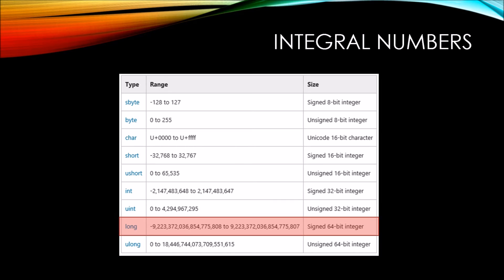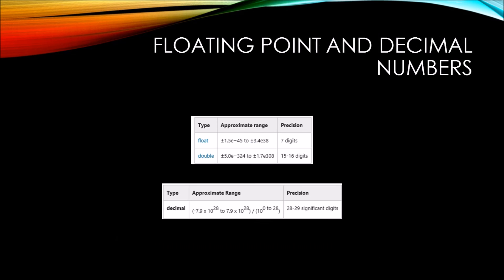Here we have the long data type, and you can see that it occupies 64 bits of memory. The range is too large to pronounce easily, but the long can hold a lot of numbers, just so long as they're whole numbers. The ulong data type occupies the same amount of memory as the long, except it only accepts positive numbers. The only reason I can think of to use the ulong is to calculate our national debt.